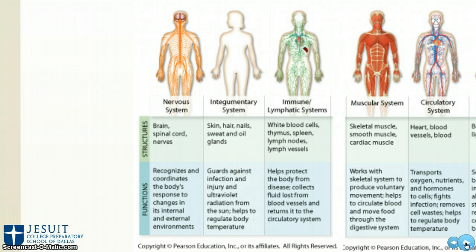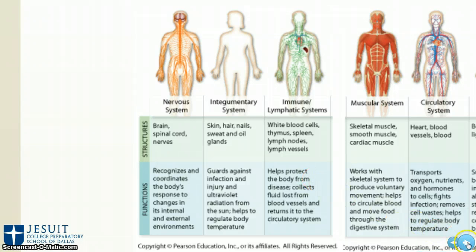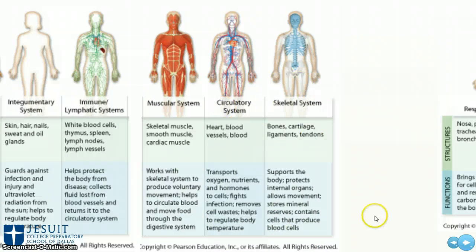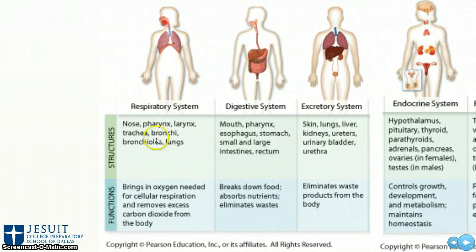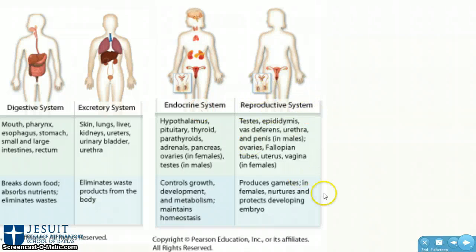This leads us to the different organ systems of the body. These are all the systems we're going over during the rest of the semester. We'll cover the nervous system, the integumentary system, and the immune system — make sure you familiarize yourself with all three. Next are the muscular system, the circulatory system, and the skeletal system. You also have the respiratory system, the digestive system, the excretory system, and finally the endocrine and reproductive systems. This week we'll be focusing just on the digestive system and the excretory systems.